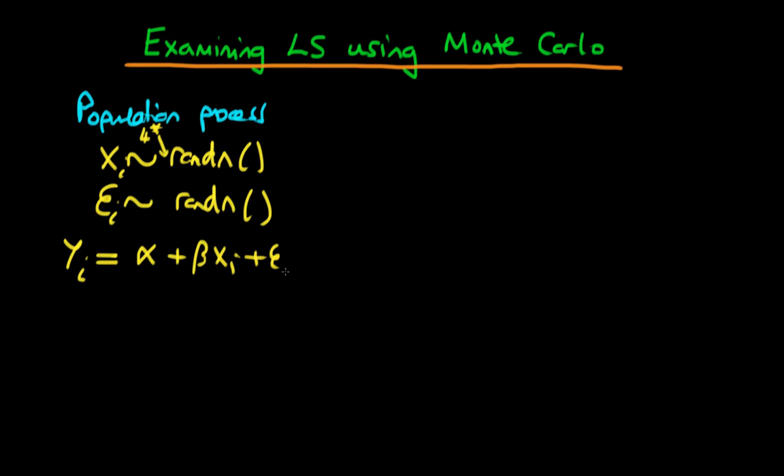The idea is that we're going to define both alpha and beta to be something which we know. I'm going to start off by defining them as being equal to 1, because that's nice and simple.